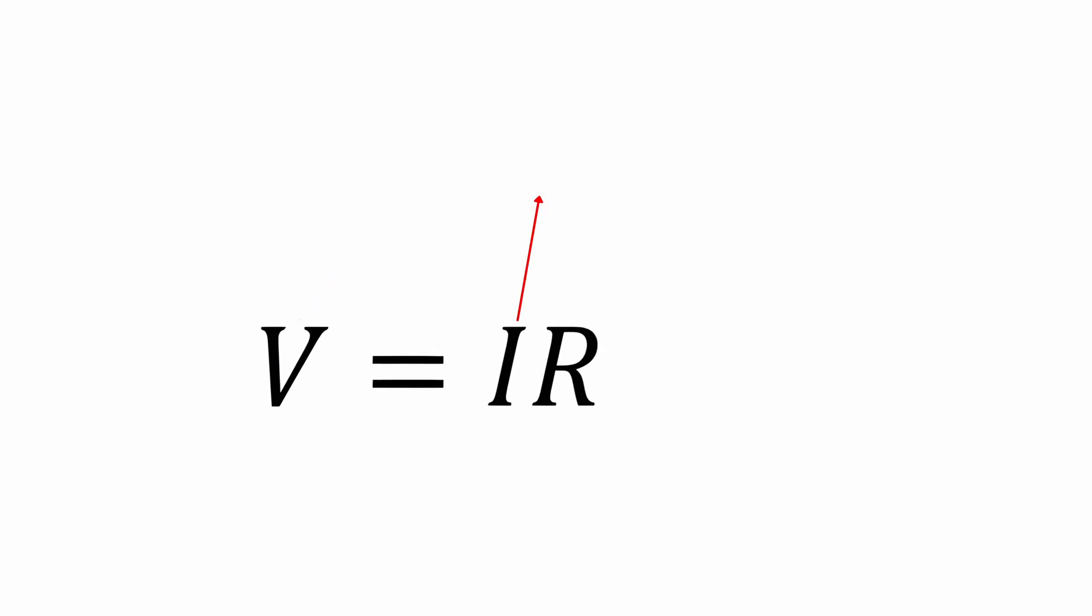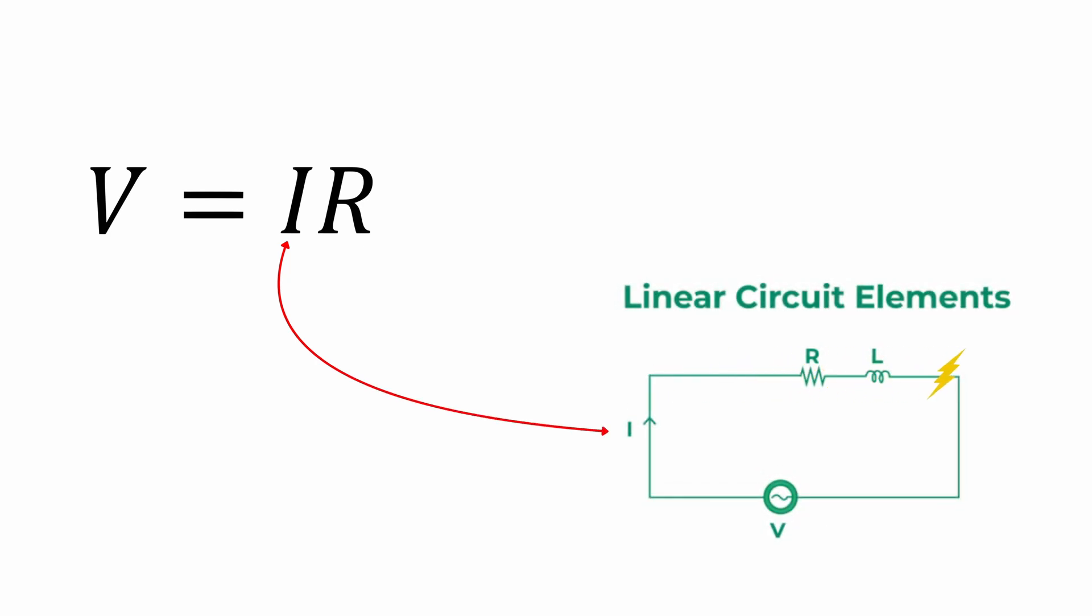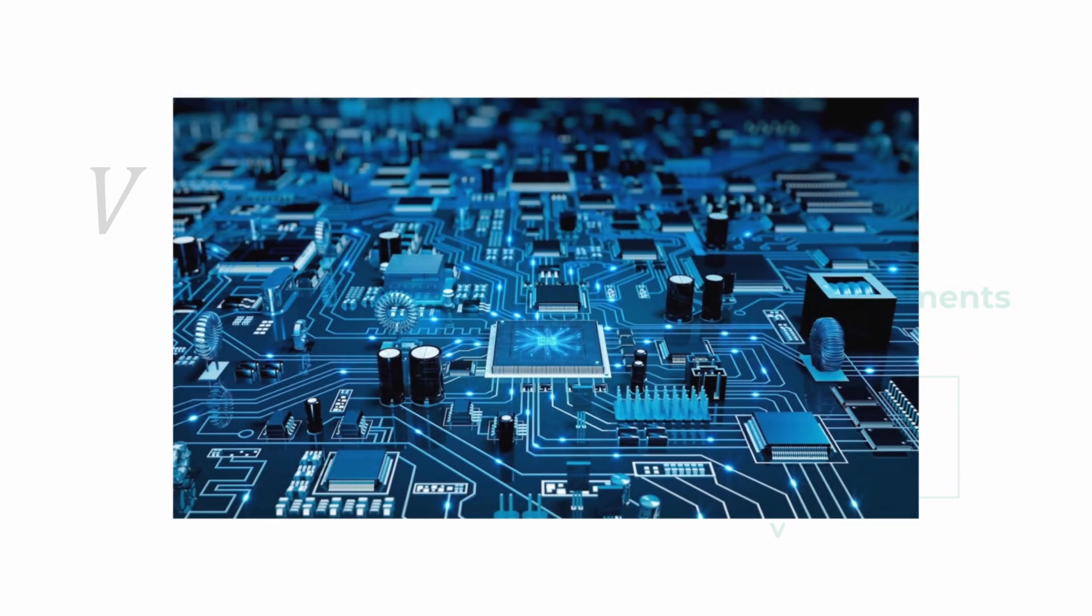The mathematical expression is V equals IR, where V is voltage, I is current, and R is resistance. This equation describes how electricity behaves in linear circuits, laying the foundation for modern electronics.